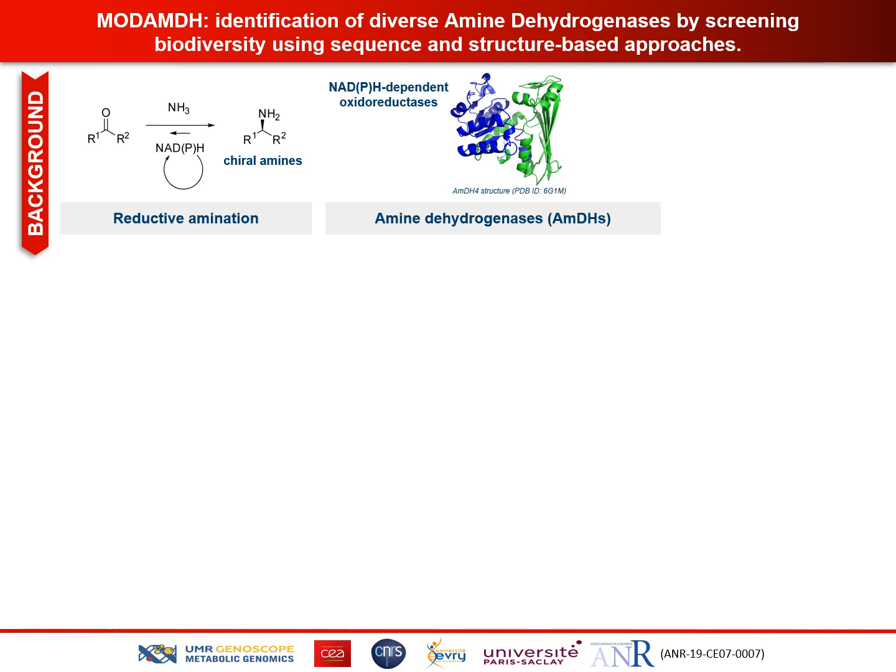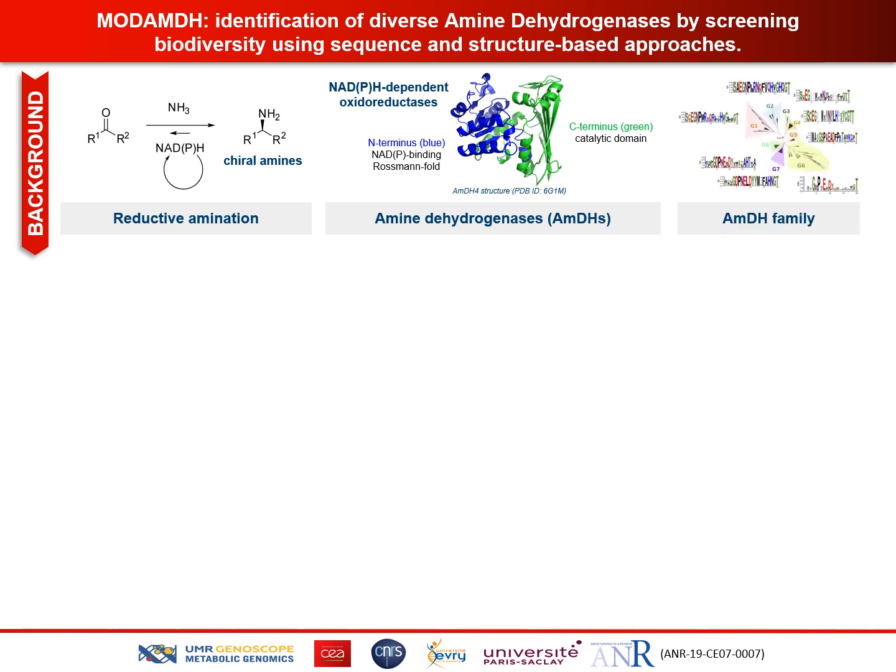Thanks to the AMDH4 crystallographic structure solved by Professor Grogan and Tim from York University, we can see two domains — the blue one is the N-terminus NADP-binding Rossmann-fold domain. Also, in a previous work, the AMDH family has been discovered from a genomic approach and some enzymes were experimentally characterized.